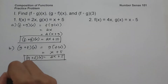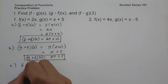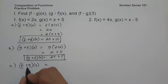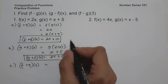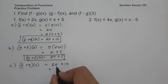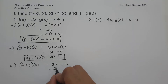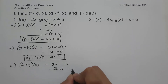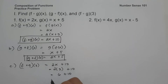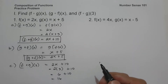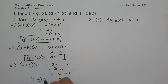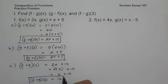On letter c, let us have f circle of g of 3. Since f circle of g of x is 2x plus 10, we substitute the value of x as 3. So this will be 2 times 3 plus 10. That is 6 plus 10, and that is 16. So this will be the value of f circle of g of 3, and this will be our answer.